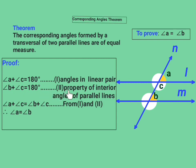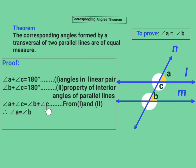We can say that angle B plus angle C is equal to 180°. This is equation number two, and the reason is: the property of interior angles of parallel lines. From equation one and equation two, their right-hand sides are equal. So equating their left-hand sides, we get angle A plus angle C is equal to angle B plus angle C. Cancelling angle C from both sides, we get angle A is equal to angle B.